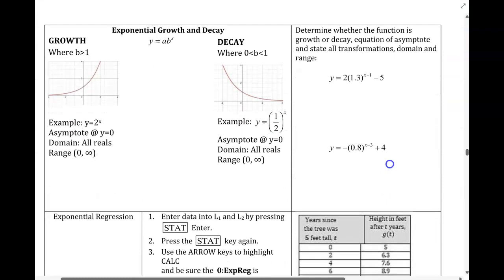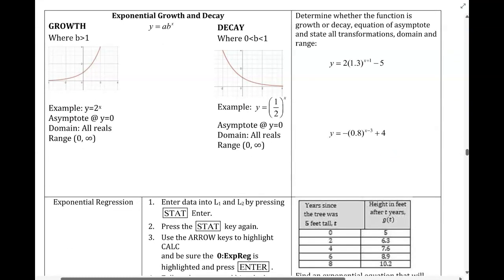In the next section, we're determining whether we have growth or decay. Remember, we have growth when our base is greater than 1. If our base is between 0 and 1, then we have decay. So this says determine whether the function is growth or decay. If I look at this base, since that's greater than 1, we know we have growth. Whereas this base here is less than 1, so we have decay.